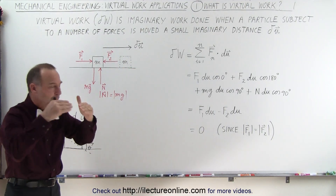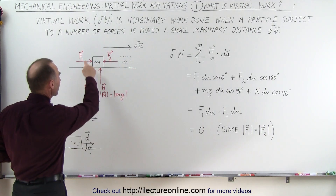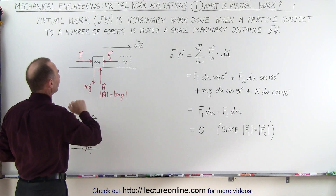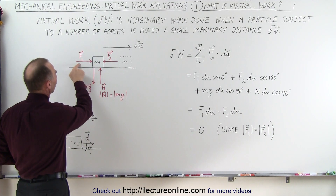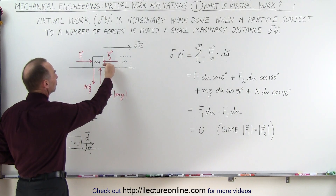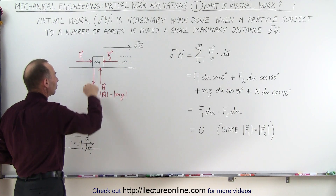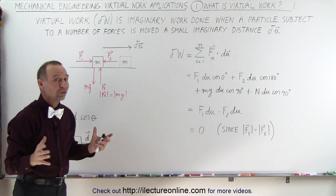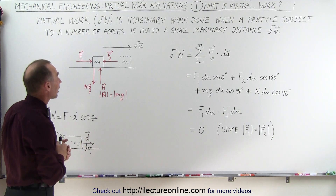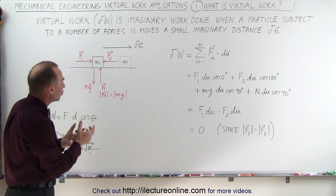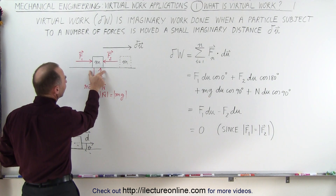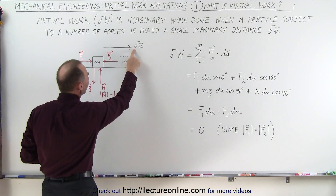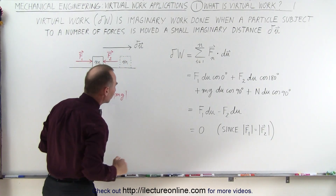So you have a number of forces acting on the particle like we do here. In this case we have a mass sitting on a horizontal surface. We have a force pushing to the right, a force pushing it to the left, gravity pulling it down, and the normal force pushing back. So there are four forces acting on this object. Let's now assume that we're going to move the object an imaginary distance — we'll call it delta U, and yes, it's a vector.